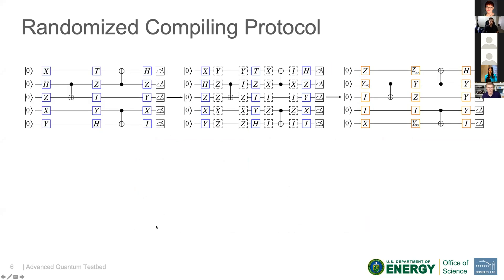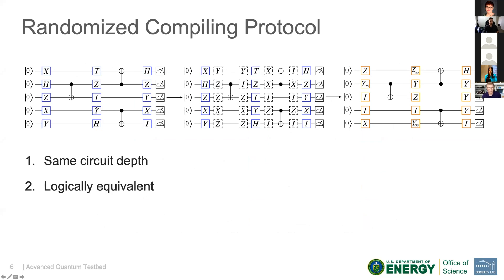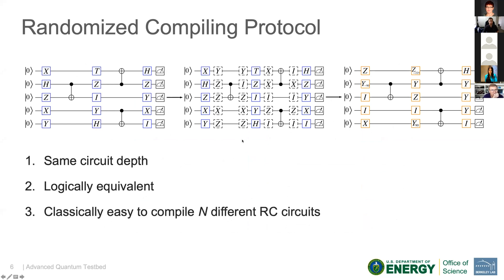There are a couple things to notice about these circuits. Firstly, comparing the first and the last circuit, they have the same circuit depth. So when we perform randomized compiling, we are not increasing the circuit depth at all. Also, they are logically equivalent because every gate that we've inserted, we've subsequently undone in the next cycle. And classically, it's very easy to perform randomized compiling on a single bare circuit many different times before runtime.